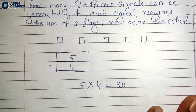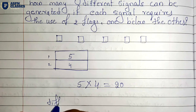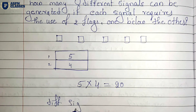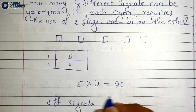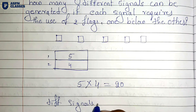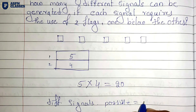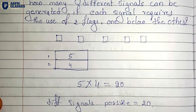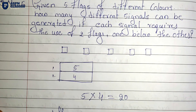So the total number of different signals that can be generated is 20. This completes the exercise.